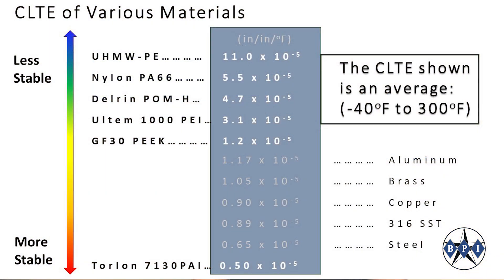This chart shows the data sheet CLTE values for a few common polymers compared to a few common metals. Ultra-high molecular weight polyethylene has a very high CLTE and is known to move a lot with temperature change. Materials like nylon and acetal are a bit more stable. As shown previously, glass and carbon-filled versions of more advanced polymers like PEEK and PAI start to rival the stability of some metals, at temperatures below 300 degrees. For many materials and many applications, these average CLTE values can be useful for practical material movement calculations.